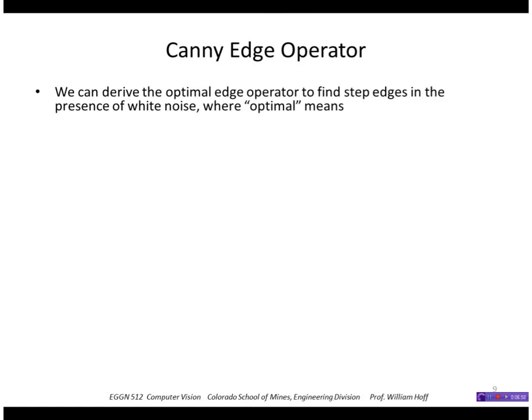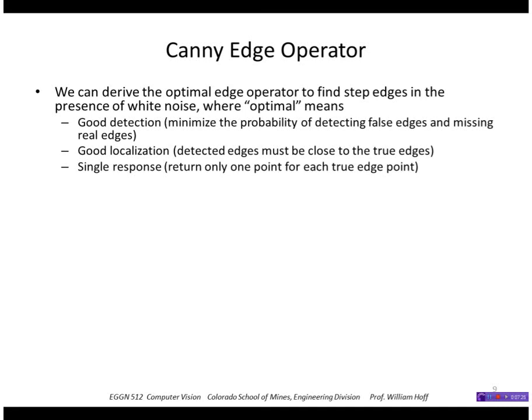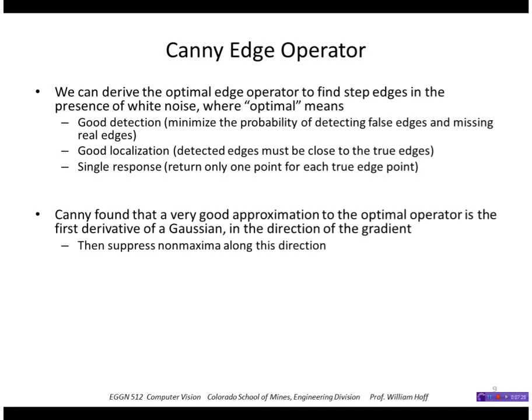The Canny edge operator is probably the most common and widely used edge operator. Canny derived the optimal edge operator to find step edges in the presence of white noise, where optimal means: good detection — minimizing the probability of detecting false edges and missing real edges; good localization — detected edges must be close to the true edges; and single response — only one point returned for each true edge point. Through numerical simulation, Canny found that a very good approximation to the ideal operator is the first derivative of a Gaussian in the direction of the gradient, followed by non-maxima suppression along the direction of the gradient.